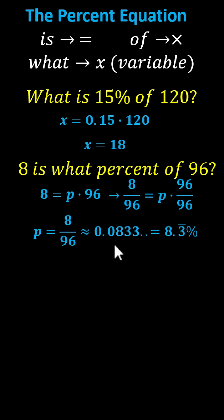Simplifying, we have p equals 8 divided by 96, which equals 0.0833 repeating. The percentage is 8.3 repeating percent. So, 8 is 8.3 repeating percent of 96.